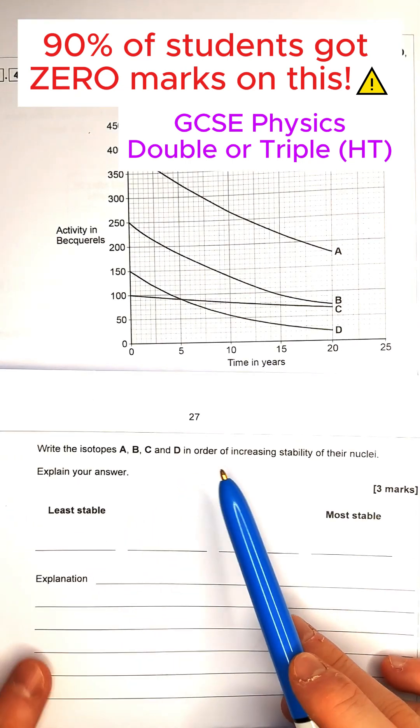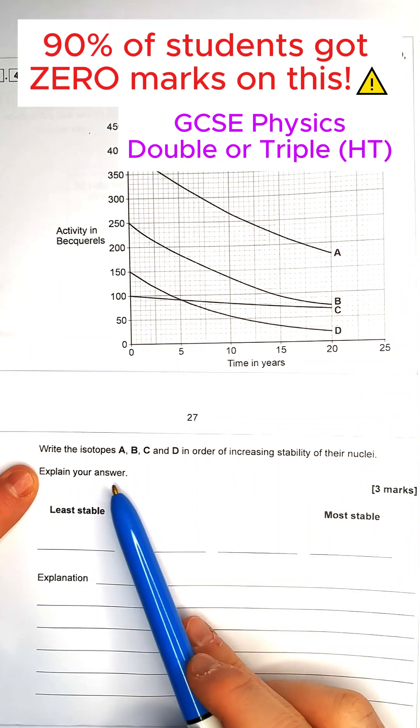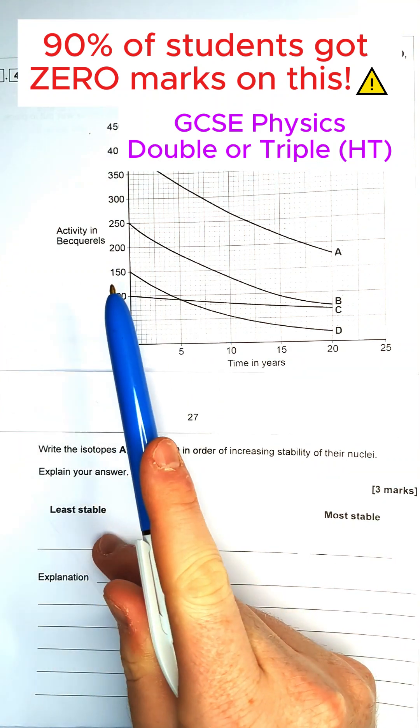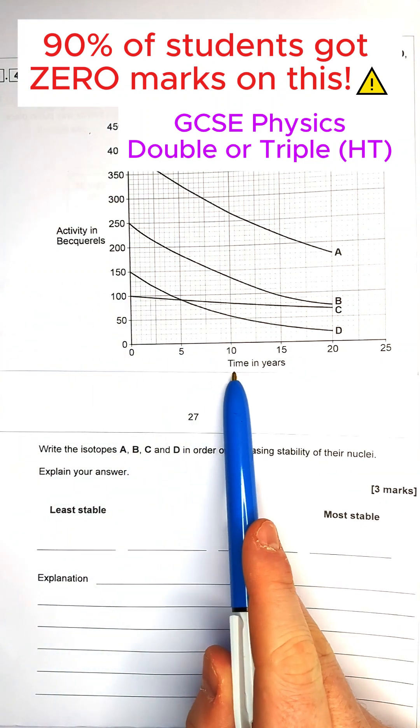90% of students got no marks at all on this question in 2022, so can you do any better? We've got four different lines here showing how the activity of four different sources varies over time.